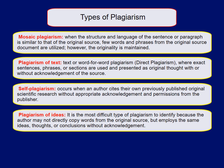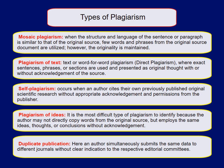The fourth type is plagiarism of the idea, which is the most difficult to detect because the author may not directly copy words from the original source but employs the same ideas, thoughts, or conclusions without acknowledgement. The last type is duplicate publication, which occurs when the author simultaneously submits the same data to different journals without clear indication to the respective editorial committees. None of the journals agree that an author can submit their manuscript to another journal at the same time.